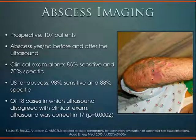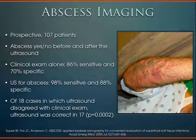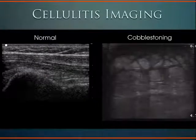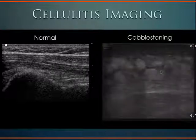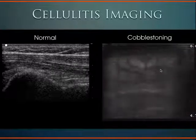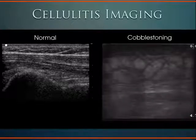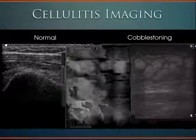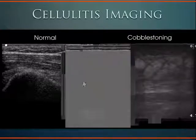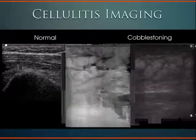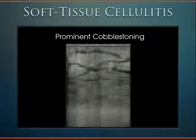Here's a patient well known to the emergency department — an IV drug user who gets abscesses all the time. He showed me his arm and said he had an abscess there, and he's usually right. But when I put the probe on his arm, all I saw was cobblestoning — he had a lot of induration and firm skin but no evidence of abscess on ultrasound. Here's another example of cobblestoning — you only need to treat with antibiotics here, this is straight cellulitis.